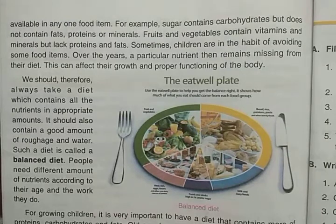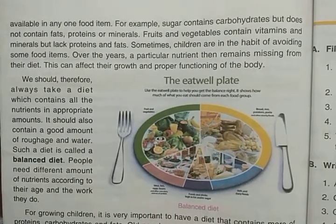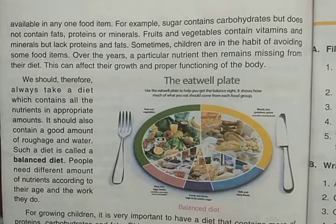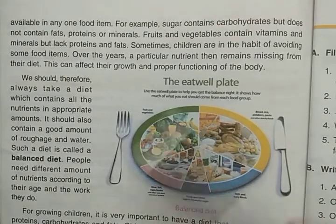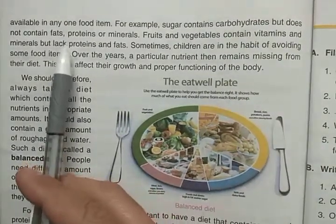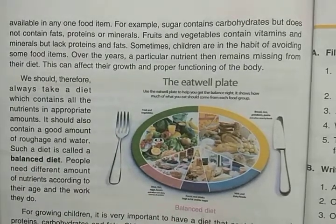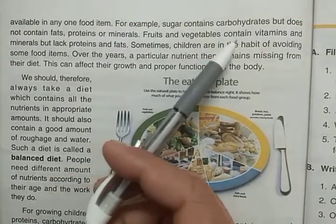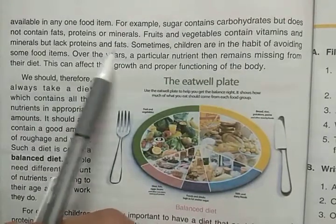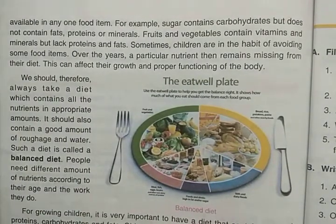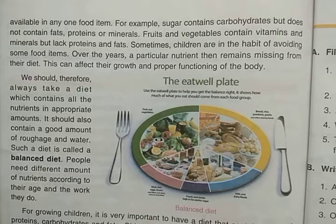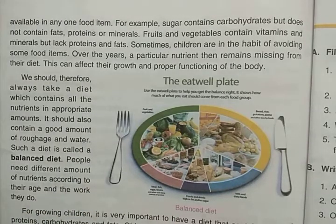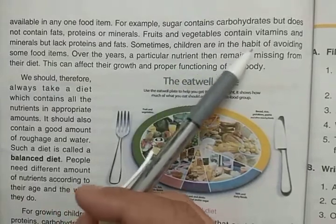For example, milk contains many nutrients but not all nutrients are present in it. Sugar contains carbohydrates but does not contain fats, proteins or minerals. Fruits and vegetables contain vitamins and minerals but lack proteins and fats. So if you only eat fruits and vegetables, you will get vitamins and minerals but not proteins or fats.